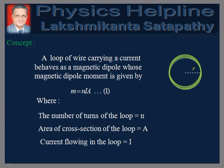Before proceeding to solve the problem, let us recall the related concepts. A loop of wire carrying a current behaves as a magnetic dipole, whose magnetic dipole moment is given by M = NIA, where N is the number of turns of the loop, A is its area of cross section, and I is the current flowing in the loop.